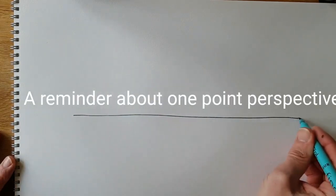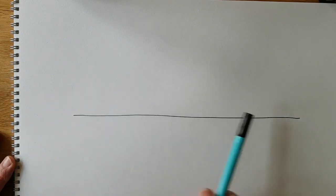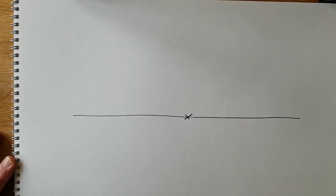First of all a quick reminder about one point perspective. So one point perspective is the simplest form of perspective and we've covered this in a previous lesson. When you start off with an eye line that line represents the level that you're looking at something at and then it's called one point perspective because you have one vanishing point.